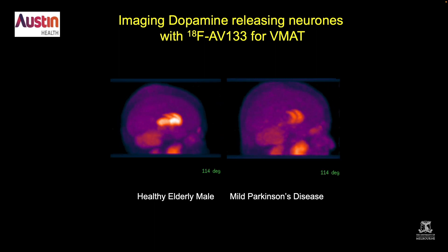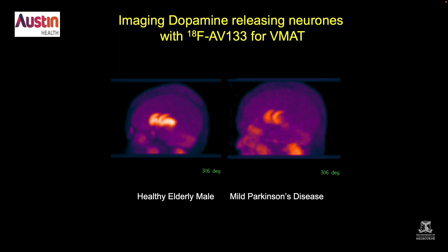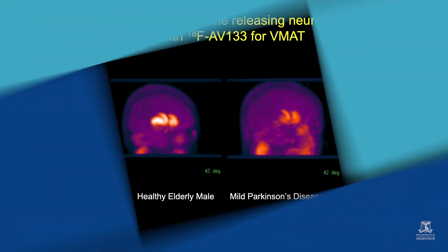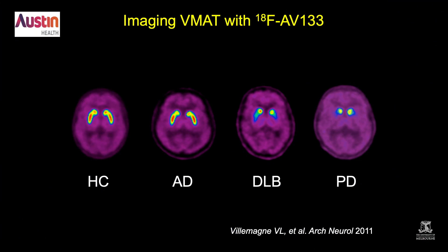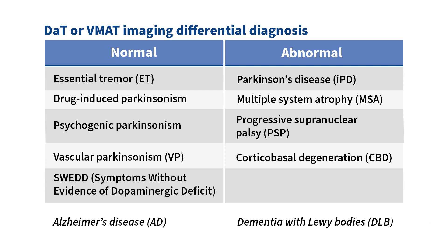We can look at the dopaminergic system for conditions such as Parkinson's disease and dementia with Lewy bodies using a tracer for the vesicular monoamine transporter. A healthy control is shown on the left and a patient with mild Parkinson's disease on the right. In slices, an Alzheimer's disease patient shows no reduction in dopaminergic innervation, whereas patients with dementia with Lewy bodies and Parkinson's disease show loss of activity in the putamen. This is useful for differential diagnosis in Parkinsonian syndromes — particularly for distinguishing drug-induced Parkinsonism, where tracer binding is often increased, from Parkinson's disease where binding is decreased. It's also very useful for distinguishing psychogenic Parkinson's disease from true Parkinson's.